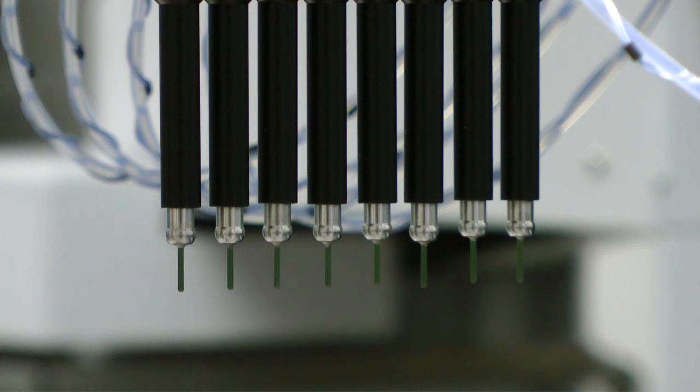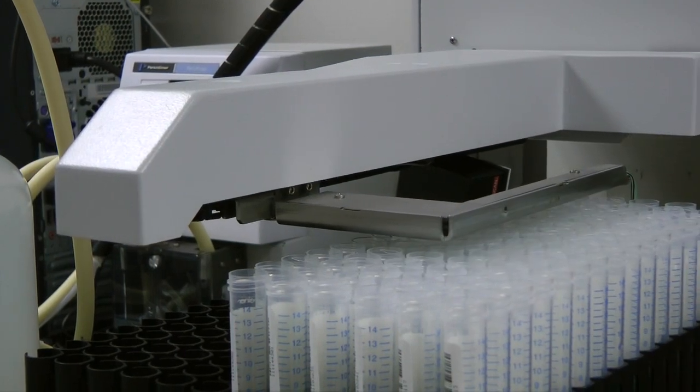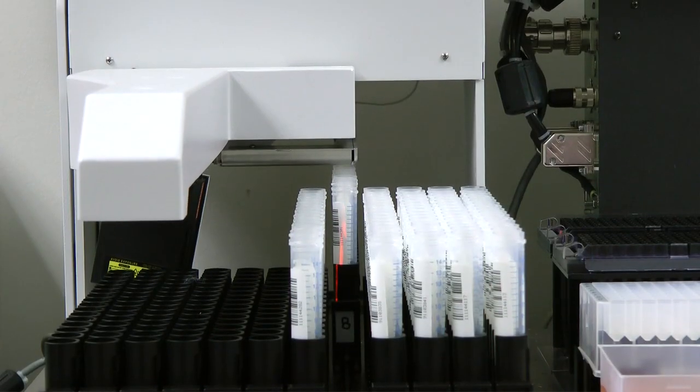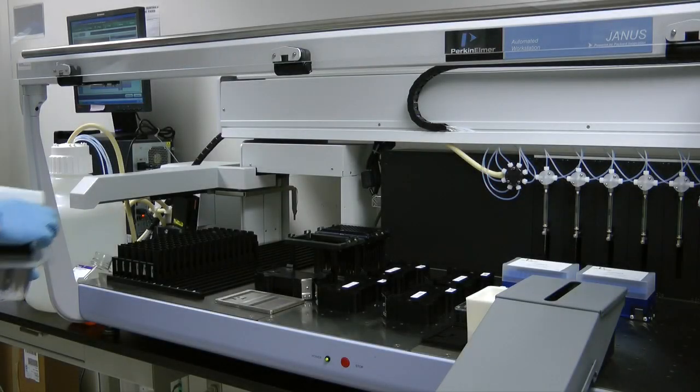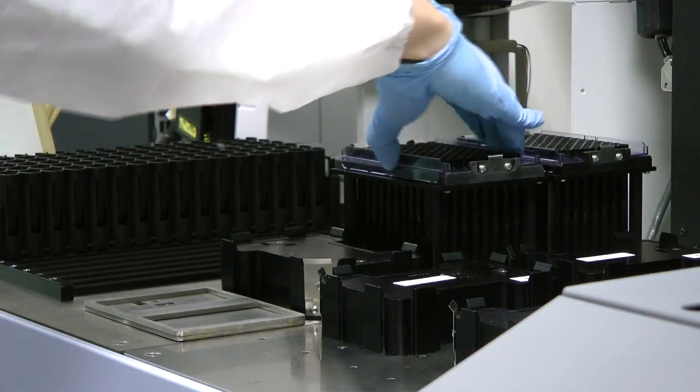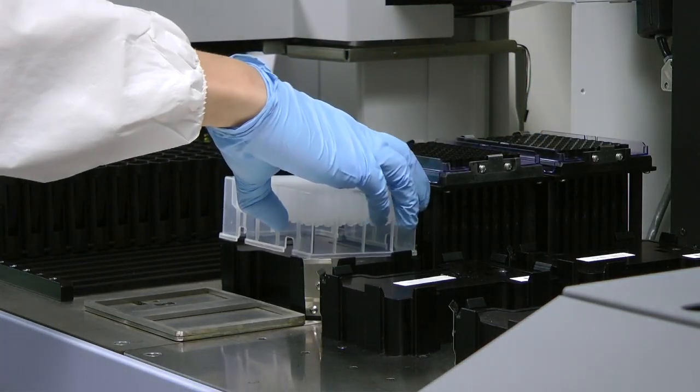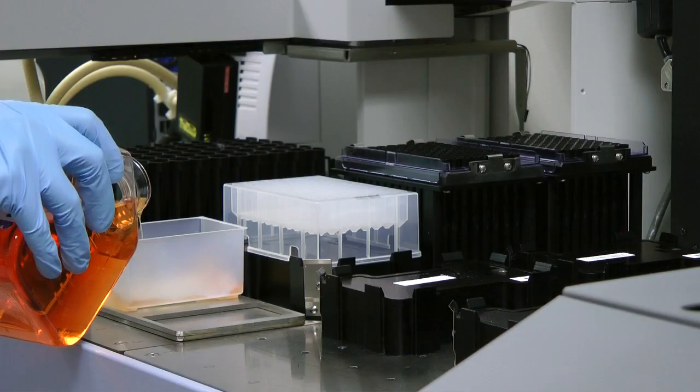The instrument has an eight-tip pipetting arm to increase speed, utilizes barcode technology to identify samples, and has detailed software to track all movements. The technologist loads necessary labware for the cell dilution step: filtered pipet tips, a sterile deep well plate, and a sterile trough containing AIM-5 cell culture media.